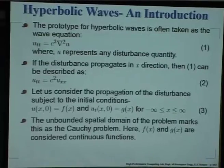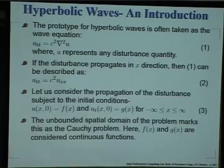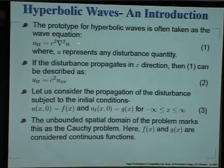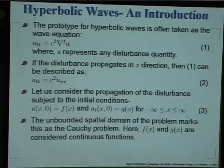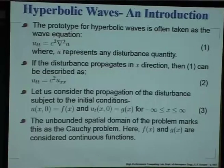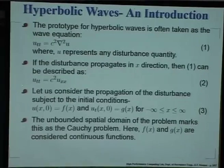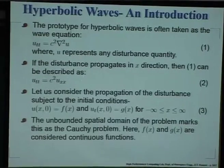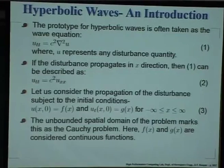Let us do the easier part — hyperbolic waves — and this goes way back to history where D'Alembert first looked at this problem trying to obtain the first solution. We talk about this simple wave equation: the second derivative in time is related to c² times the Laplacian in space. If the disturbance is propagating in one direction, let us look at the 1D case — that is what D'Alembert did. He tried to solve u_tt = c² u_xx subject to some initial conditions.